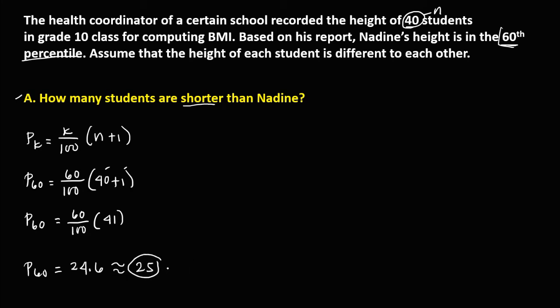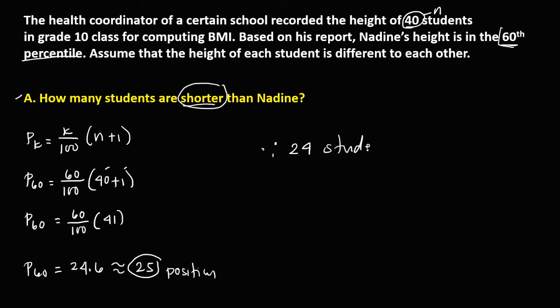This 25 is the position of Nadine. Since we want to find the number of students that are shorter than Nadine, and Nadine is in the 25th position, therefore there are 24 students shorter than Nadine.